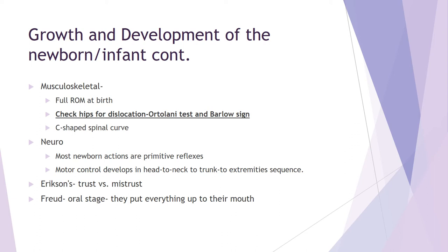When checking for hip dysplasia, there are two tests: the Ortolani and the Barlow's sign. You bring the baby's legs together and up toward the abdomen, keeping hands on the sides of the hips, then rotate them out and down to the side. If you feel any clicking, popping, or the femoral head slipping out of the hip socket, that's a positive sign and requires further evaluation. Negative signs — no clicking, popping, or slipping — are what we want. These tests check for congenital hip dysplasia. Newborns have full range of motion at birth, and their cervical spine is in a C shape.